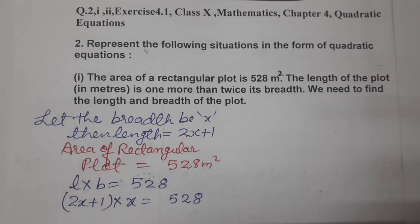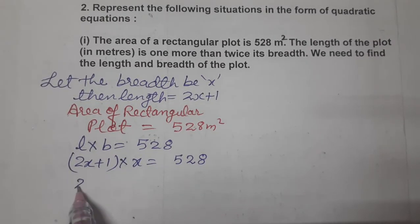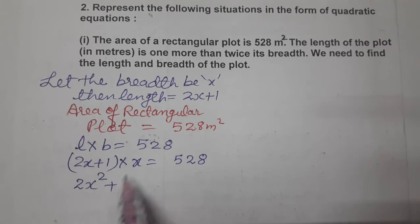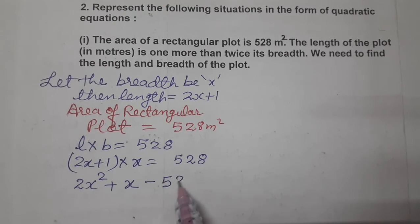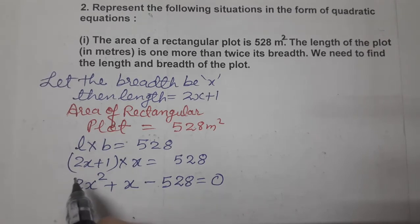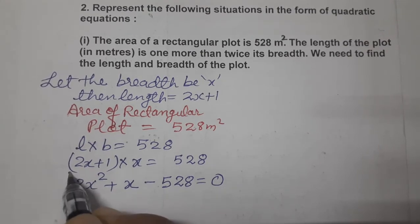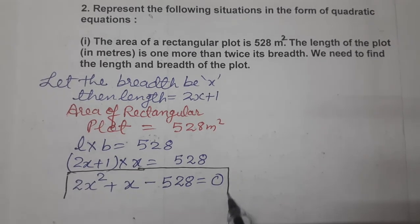Now multiply it out. x into 2x gives 2x square. x into 1 gives x. And 528 ko hum left hand side mein laate hain, so minus 528. Equals to 0. See, this is the quadratic equation. Hamei represent karna tha quadratic equation mein, aur humne represent kar diya.